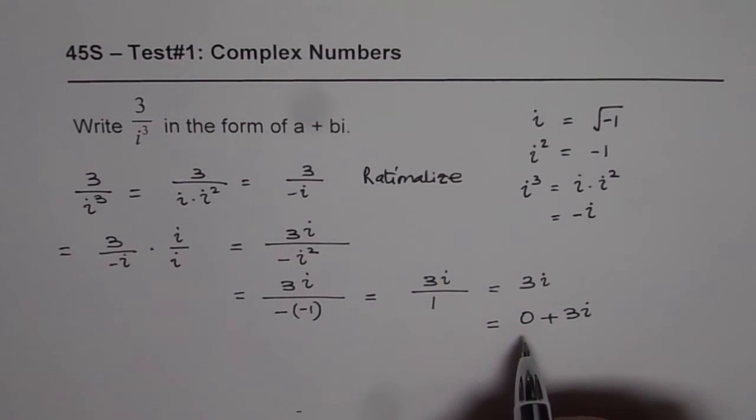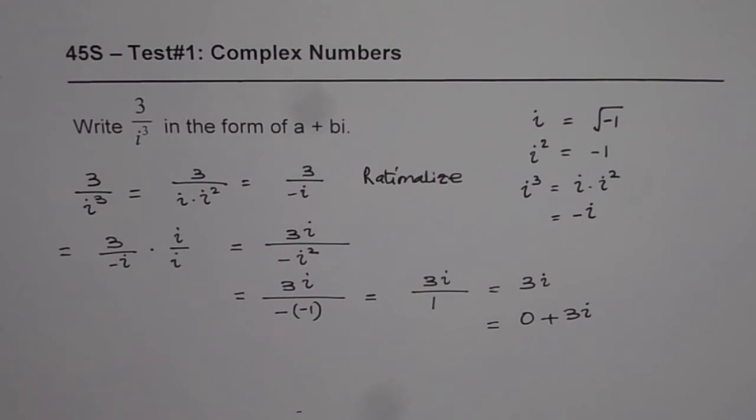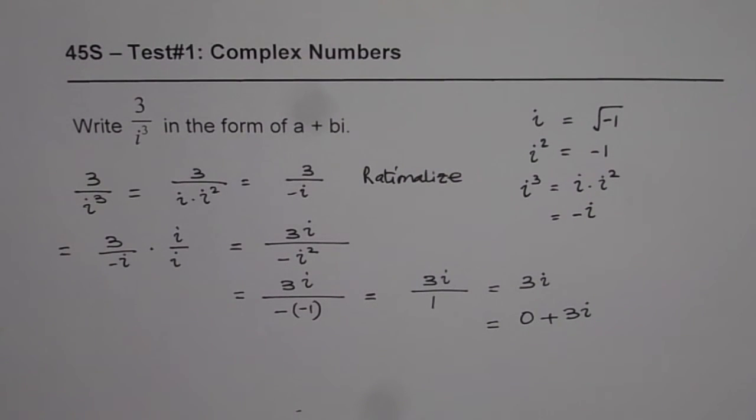Where 0 is the real part of the complex number and 3i is a pure imaginary number. So that is our answer. I hope that helps. Thank you.